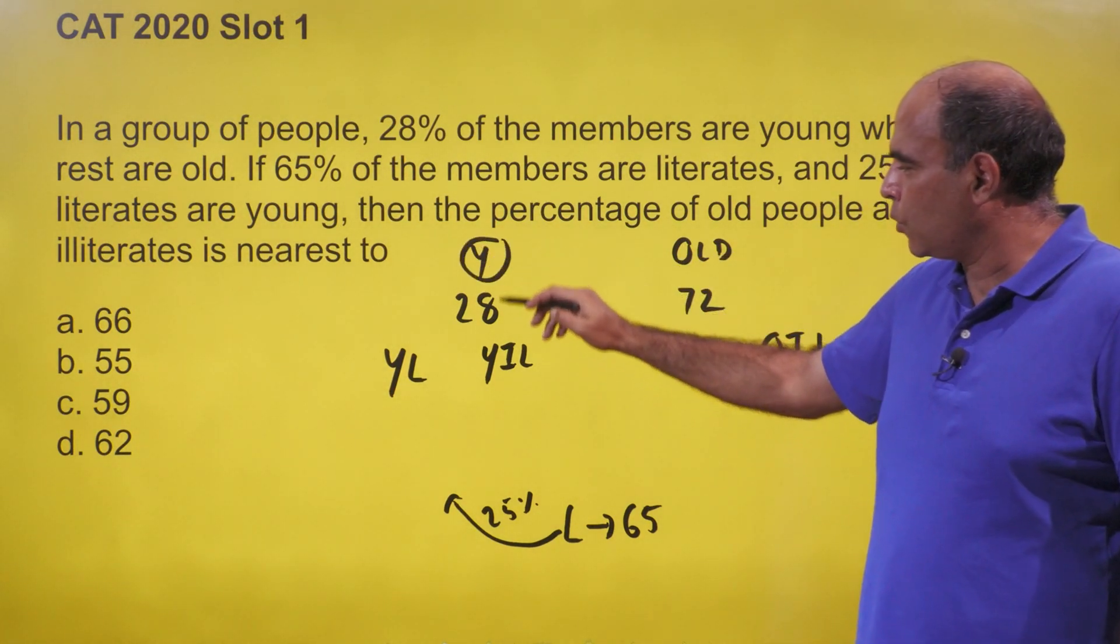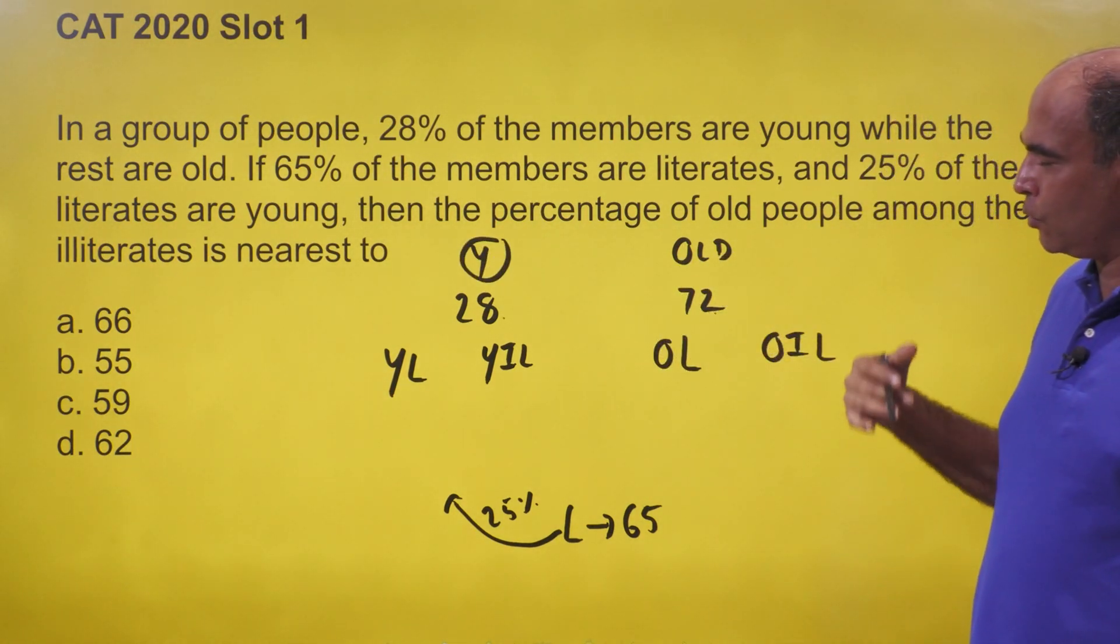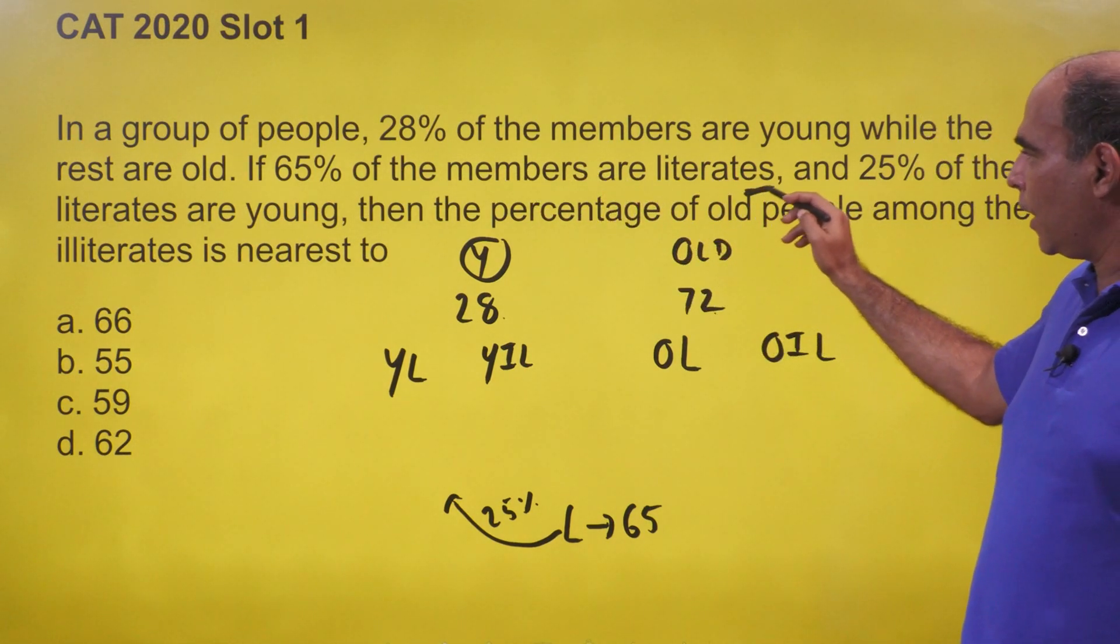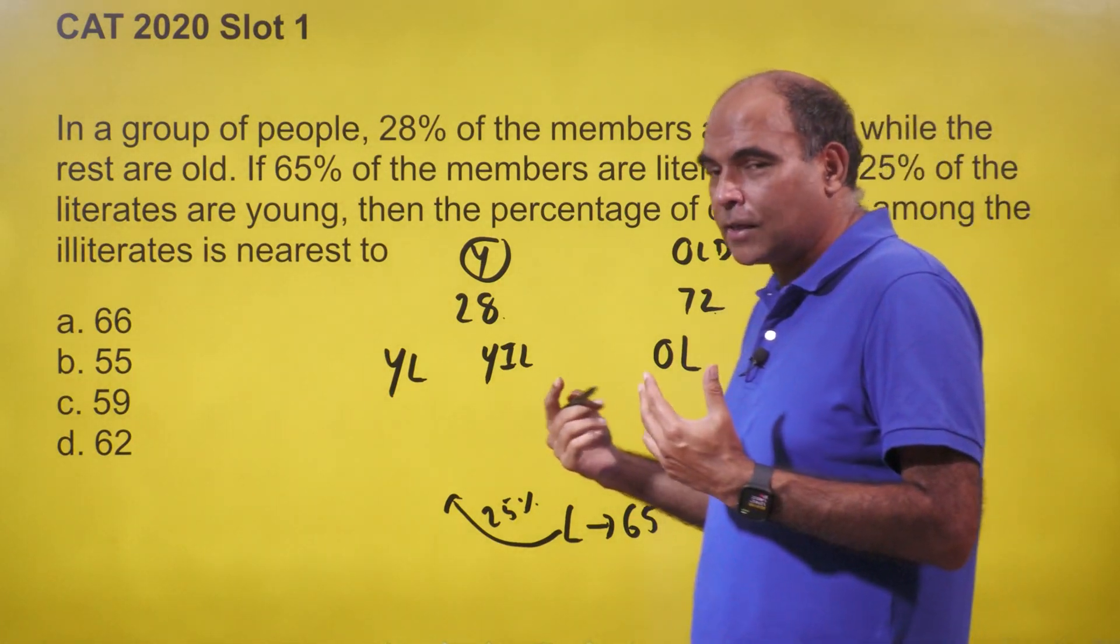So the young members are 28, 72 are old. If I assume 100 people, 65 percent of the members are literate. The moment you realize this, you should realize that there are four kinds of people.